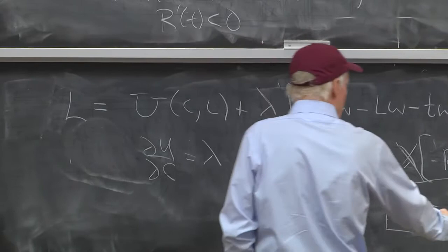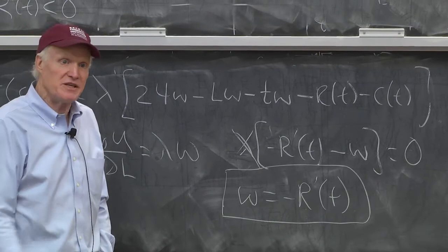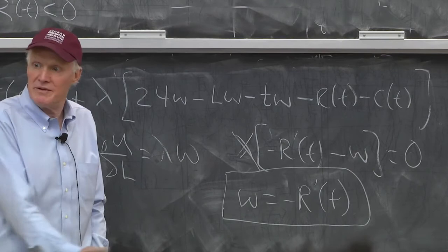And it's saying when R prime is bigger than W, or minus R prime is bigger than W, it says the wage of being the limo driver exceeds the wage the guy's paying me at work. So I'll spend more time driving the limo and less time working at work. You can see the problem. You're basically working in the car. That's the way to think about it.